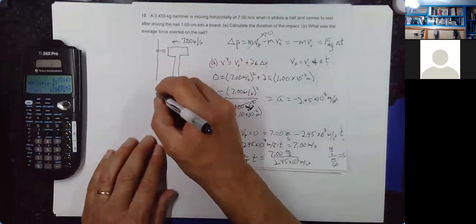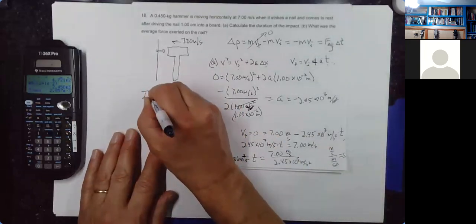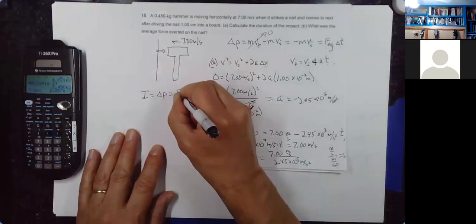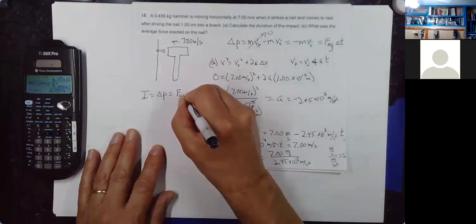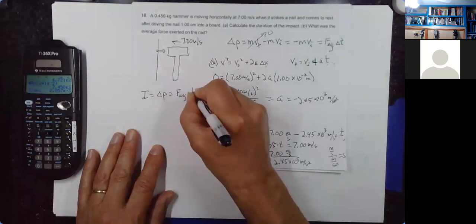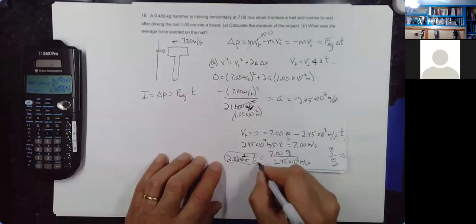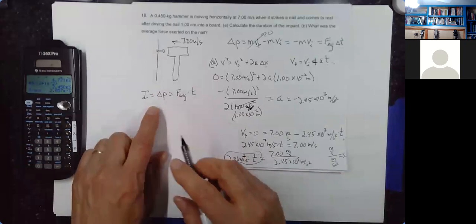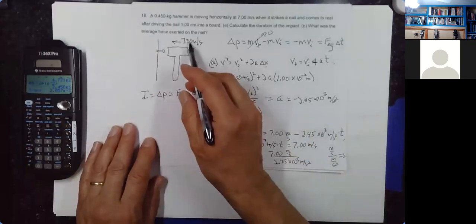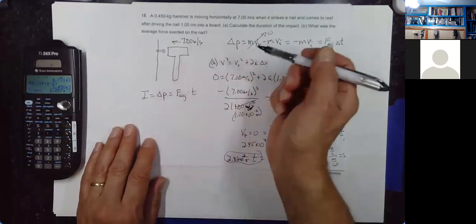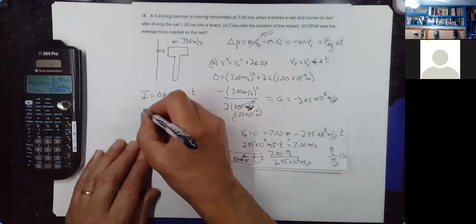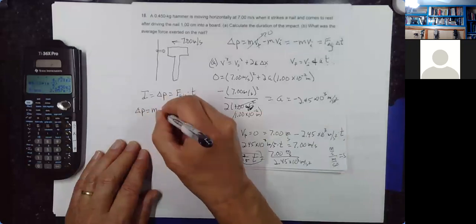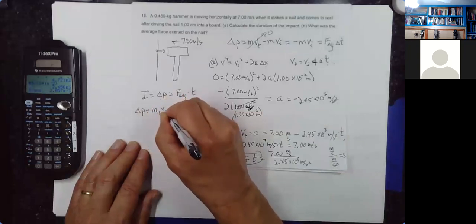What was the average force exerted on the nail? I'll go to the impulse equation: impulse equals the change in momentum, and it's the average force times T — the time it acted for. I just figured out T. The change in momentum: the only thing that had momentum was the hammer at 7 meters per second. ΔP equals the mass of the hammer times V_final for the hammer minus V_initial.